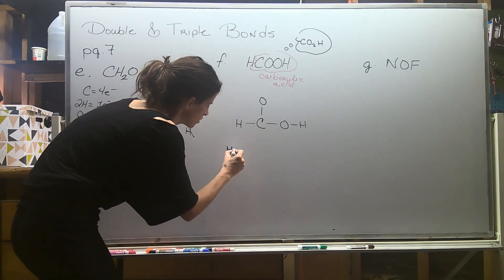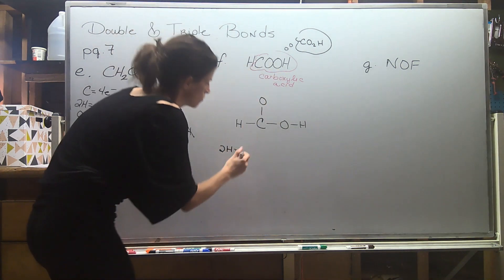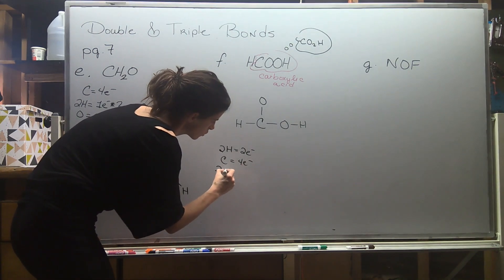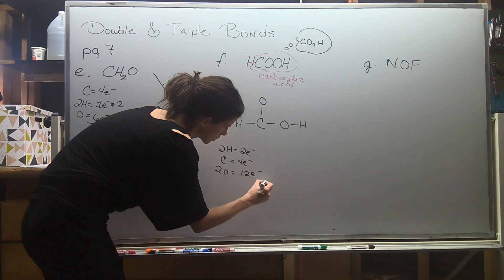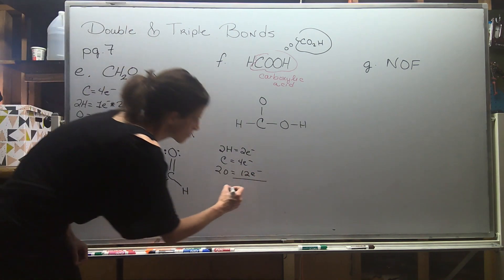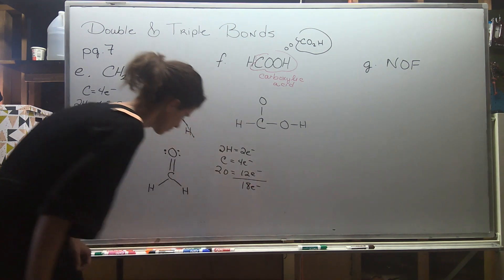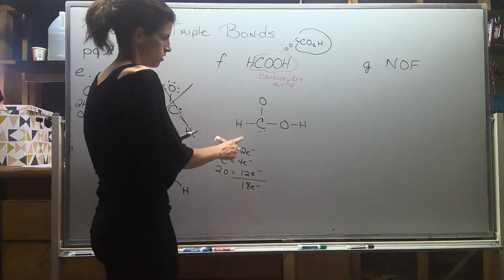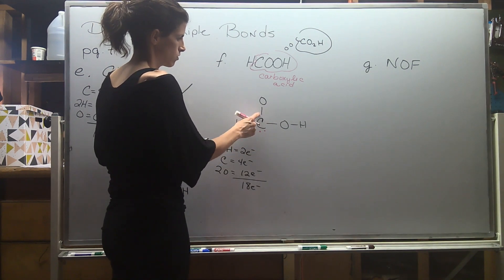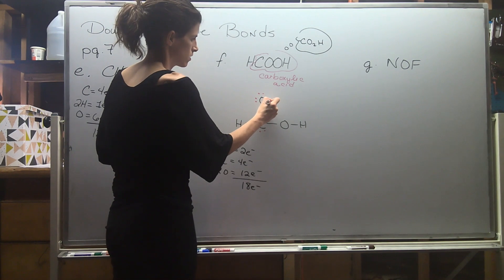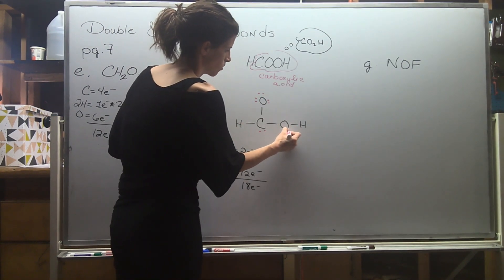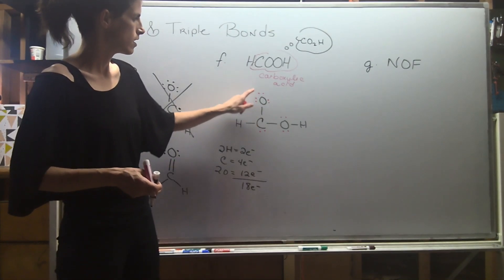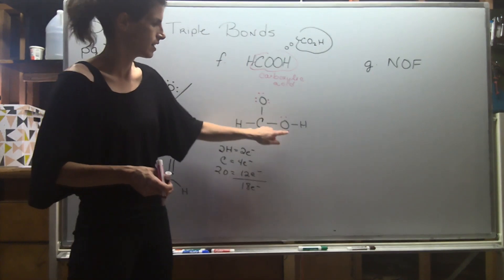The carboxylic acid has carbon attached to an oxygen, and then that oxygen attached to a hydrogen. Let's do our electron math: two hydrogens give two electrons, one carbon gives four, and two oxygens give 12 electrons — six times two — for a total of 18 electrons. Going ahead and fixing the octets: carbon needs electrons to reach eight, one oxygen needs six more, the other oxygen with four needs four more. Counting all: two, four, six, eight, ten, twelve, fourteen, sixteen, eighteen, twenty. I'm over by two.